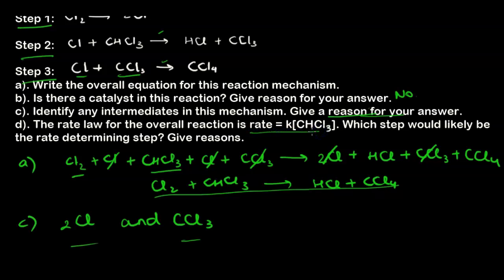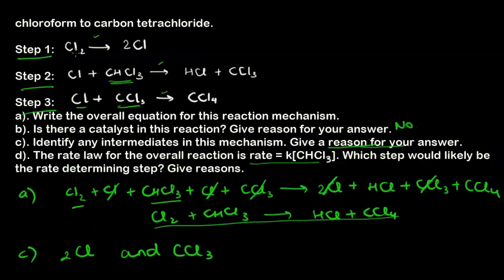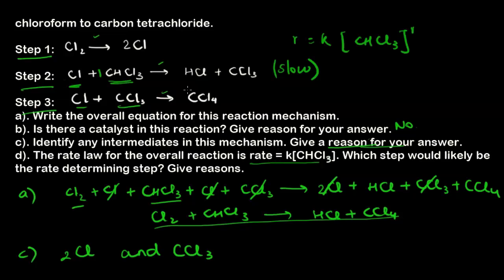Part D: given that the rate law is rate = k[CHCl₃], which step is the rate determining step? We look for the step where CHCl₃ appears as a reactant. CHCl₃ is a reactant only in step 2, so step 2 is the rate determining step. Although step 2 also contains Cl as a reactant, Cl is an intermediate and does not appear in the rate law.